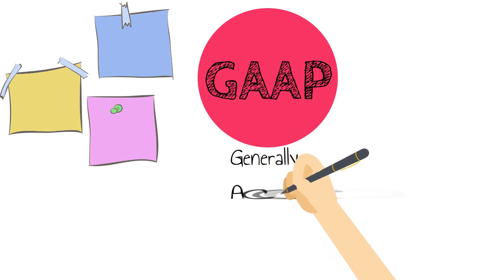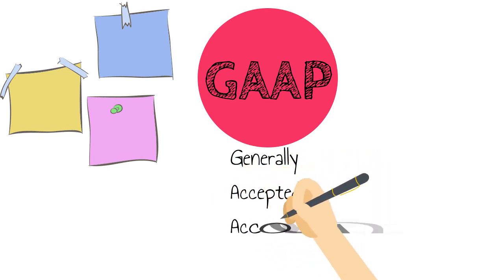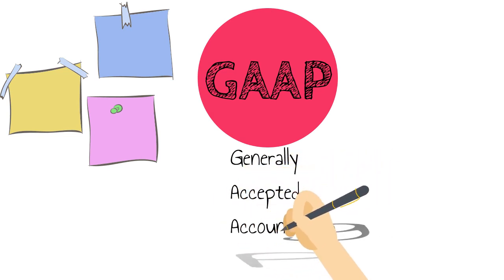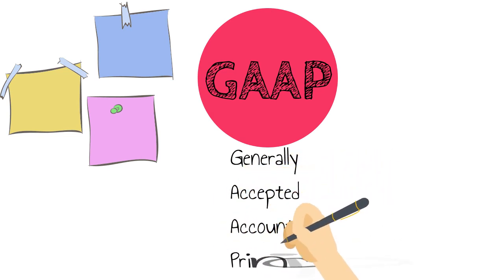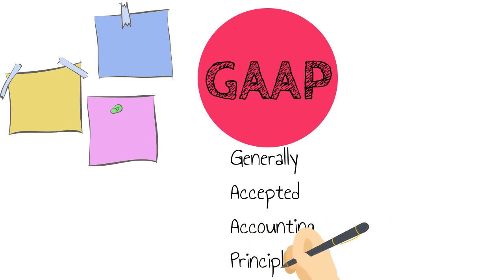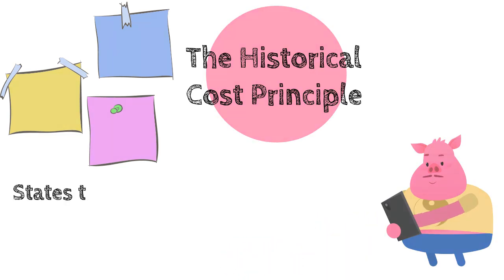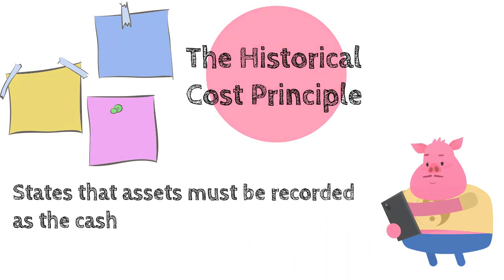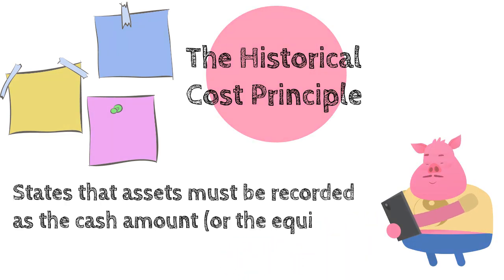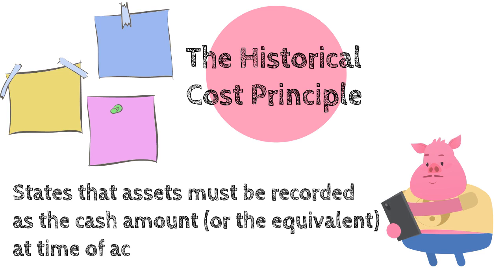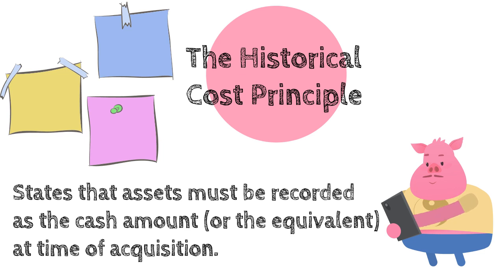The cost principle is a crucial aspect of the generally accepted accounting principles. So when reporting the financial position, the cost principle states that assets must be recorded as the cash amount or the cash amount's equivalent at the time of acquisition, hence the name historical cost principle.